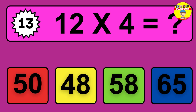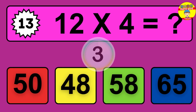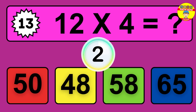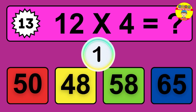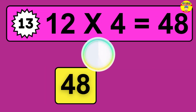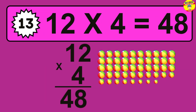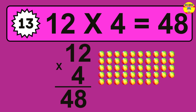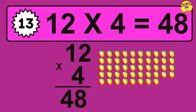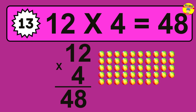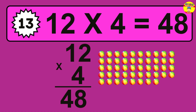Question thirteen: 12 times 4 equals what? The answer is 12 times 4 is 48. To calculate, we have 12 groups with 4 balls each. So how many balls do we have? 48 balls.